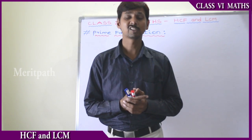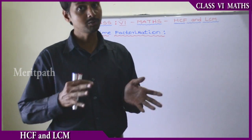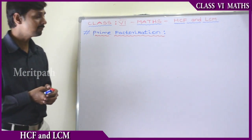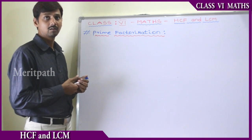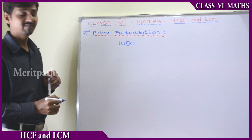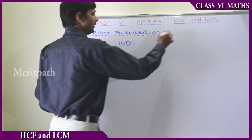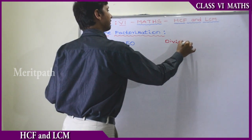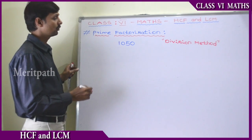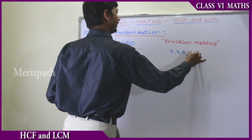Every number can be expressed as a product of prime factors, and this method is called prime factorization. We will use the division method to find out the prime factors. The prime numbers are 2, 3, 5, 7, 11, and so on. Let us find the prime factors for 1050 using the division method. We start with the first prime number, 2.